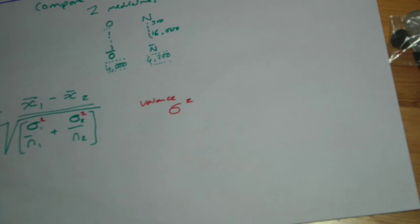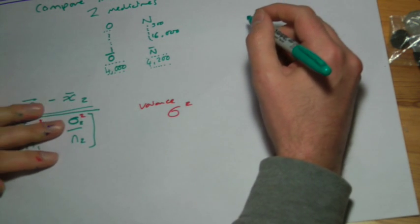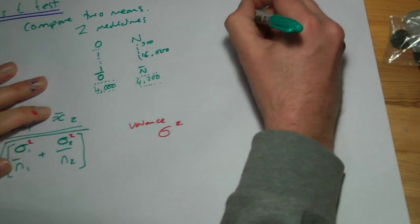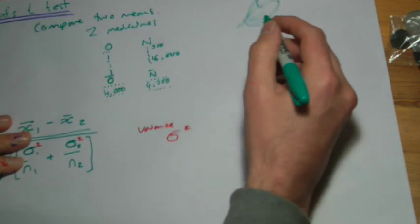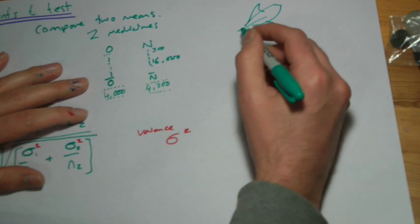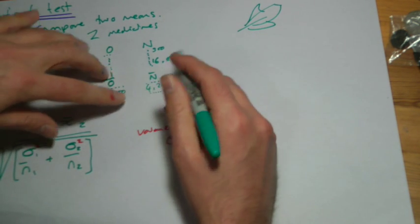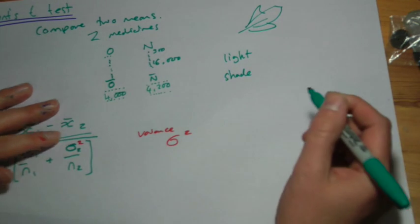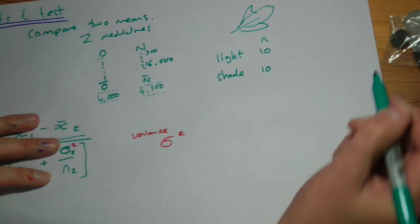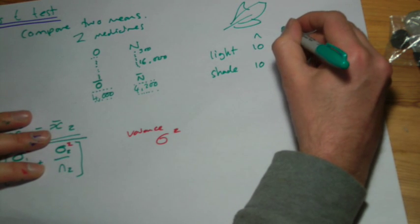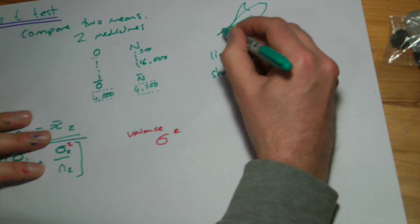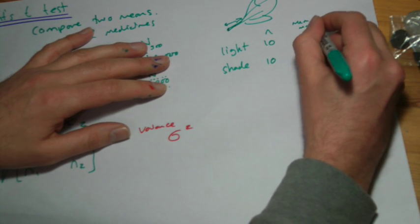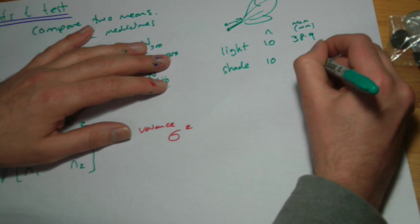Let's look at the textbook example, which is on page 247 of the AS edition. They've used ivy leaves and they're measuring the length of the petiole — the stalk on the leaf. This is a really useful kind of test in science because very often we're comparing two things — what happens if we change something? They're comparing leaves in the light and leaves in the shade. The sample size in each case is 10, though it doesn't have to be. The mean petiole length in millimetres is 38.9 and 52.8.